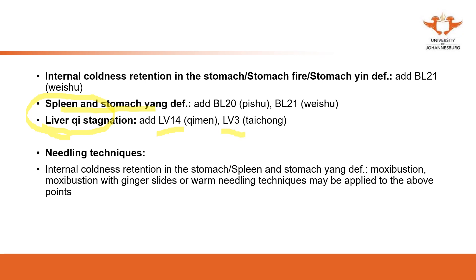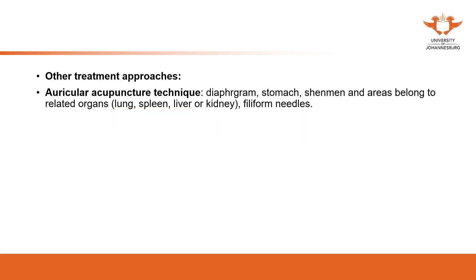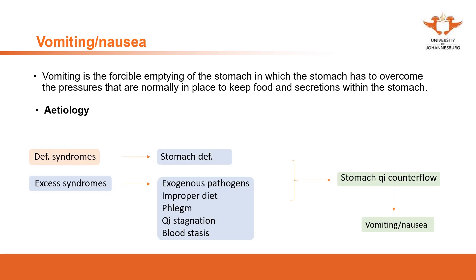For spleen and stomach yang deficiency, we use the back-shu points. The back-shu points are more used to tonify, so to tonify the spleen and stomach we also use reinforcing manipulation techniques. You can also use moxibustion or acupuncture.